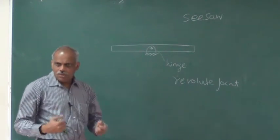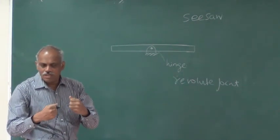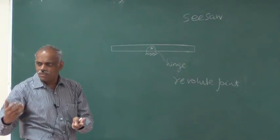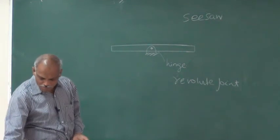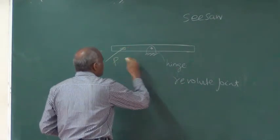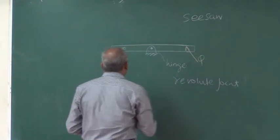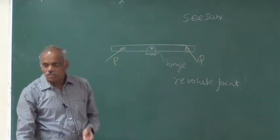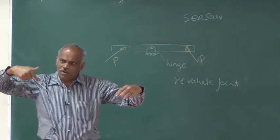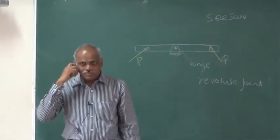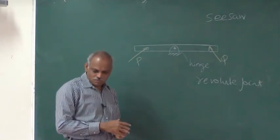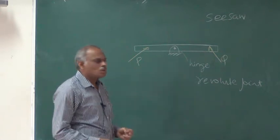The seesaw is in equilibrium by application of two forces, P and Q. It need not be a seesaw — it can be any member hinged at the center with a force applied in one direction and another force in the other direction, and it is found to be in equilibrium — not moving with respect to time.